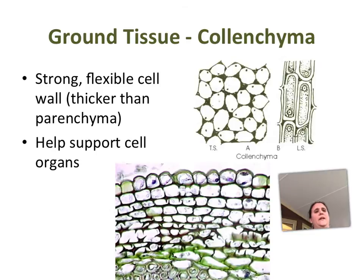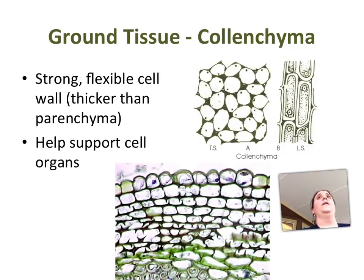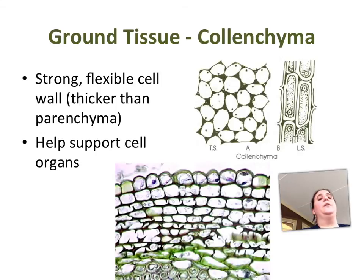The next type of ground tissue is collenchyma. Collenchyma, like the celery that you looked at, has strong flexible cell walls. If you think about celery, you can bend it — you have to apply some pressure to get it to break, but it's very flexible. An example would be a rubber band: it has strength to hold things together but also has that flexibility. Most of the time you're going to see collenchyma when the plant needs help to support organs like the roots, stem, or leaf.